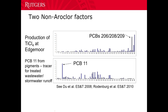Two of the factors found in the Delaware River are related to PCBs produced not from Aroclors but inadvertently. When you make titanium dioxide — starting with titanium tetrachloride — using a certain process, you end up with high molecular weight PCBs. Then PCB 11 comes from organic pigments used in printing, paper, and even clothing. So PCB 11 is a marker for those kinds of things. That's five factors.